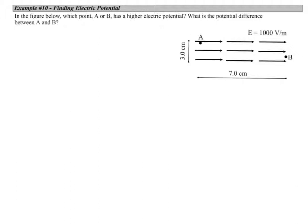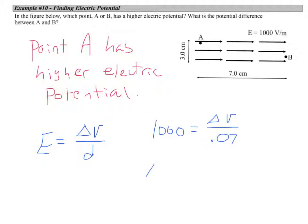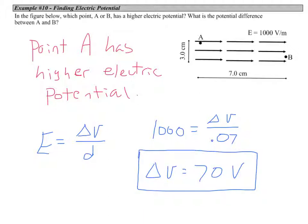Let's look at another example. In this figure, which point — A or B — has a higher electric potential? And what is the potential difference between points A and B? The electric field, designated by these arrows here, points downhill, meaning it points from higher potential to lower potential. So which of these points, A or B, is at a higher potential? It's point A that has the higher electric potential. The magnitude of the potential difference is given by E equals V over D. These two points are 7 centimeters apart, so our potential difference is 70 volts. That means point A is 70 volts higher than point B. The actual electric potential at each of those points might be different — it's just the difference between them that is 70 volts.